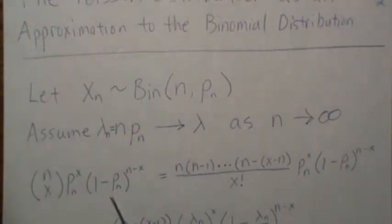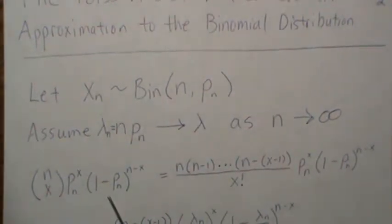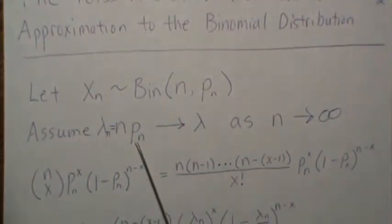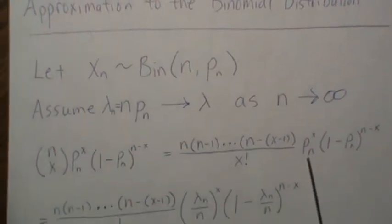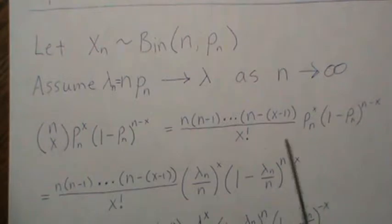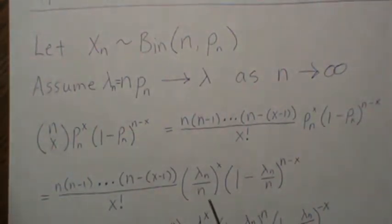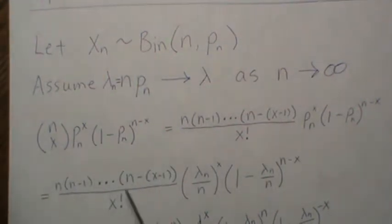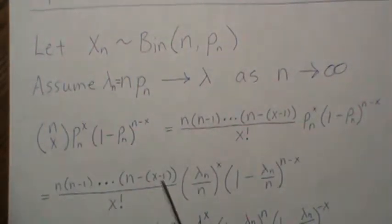So this is the binomial probability. And then we can write the combinations out like this. Then p_n can be approximated with lambda_n over n. So we'll put those here. And then there are x of these, 1, 2, to x.